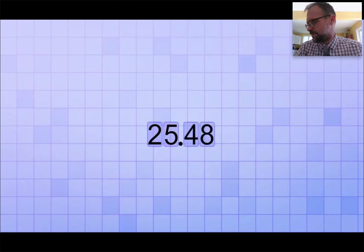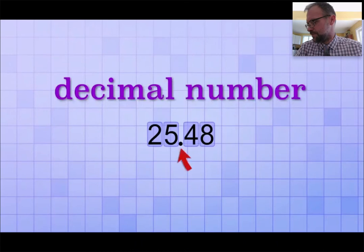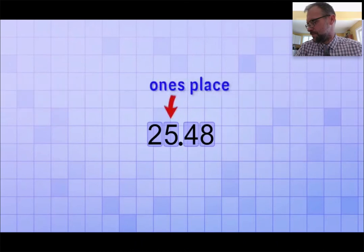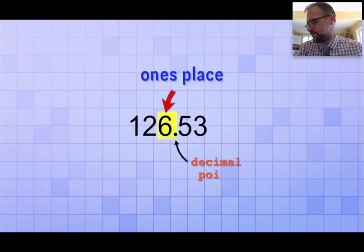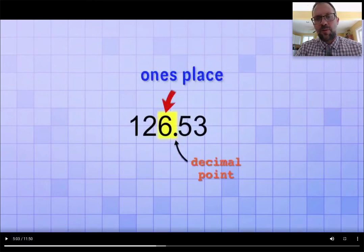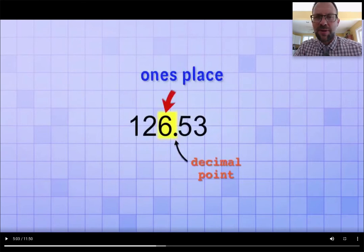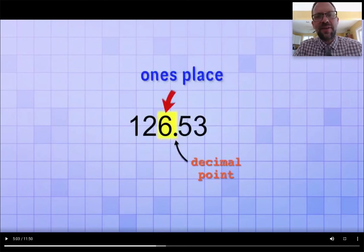If a number does have decimal digits, then we call it a decimal number. And the decimal point helps us quickly recognize which digit is in the ones place. For example, if you see a sequence of digits like 1, 2, 6 point 5, 3, you can tell right away that the digit six is in the ones place, because it's immediately to the left of the decimal point. The decimal point couldn't act as a point of reference if it wasn't the same place value every single time. And that place value to the left of the decimal is always the ones place. That means the two is in the tens place, and the one is in the hundreds place.